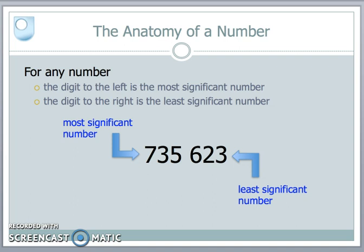So what we do when we look at rounding up and rounding down to significant numbers, we always work from left to right. The most significant number on the left to the least significant number on the right.